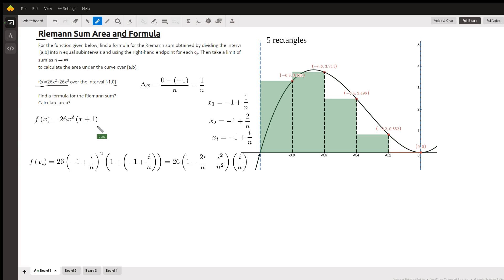I've rewritten the function this way: 26x² times the quantity (x + 1). Same function. Here's the graph of that curve from negative 1 to 0, and this picture shows